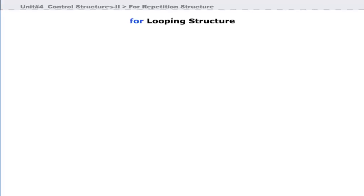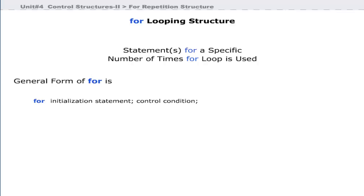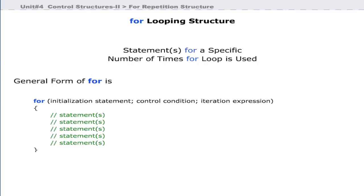Now we will discuss the for loop structure. The for loop is used to repeat statements for a known number of times. The general form of for is the for keyword followed by an initialization statement, control condition, and iteration expression. Inside the braces, the next line may be a single statement or a block of statements.